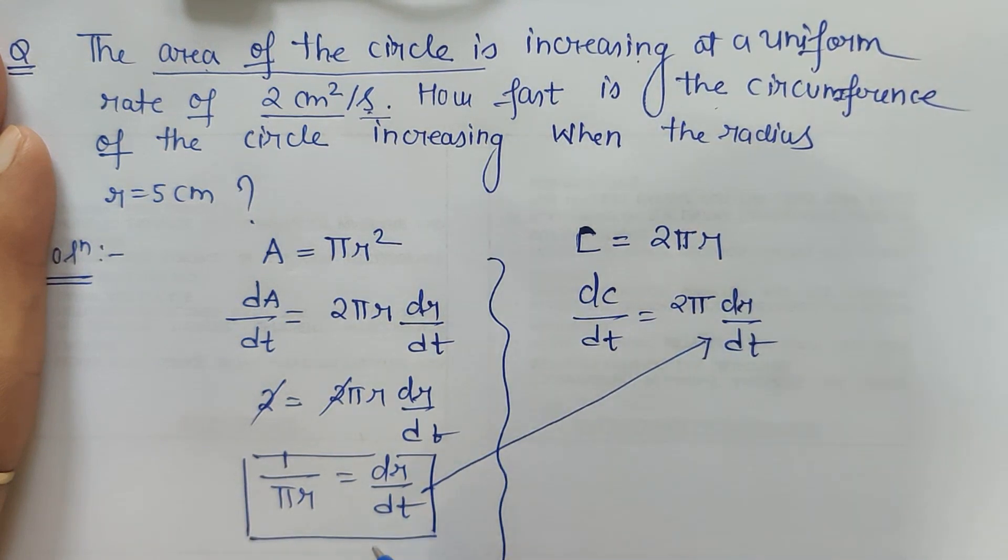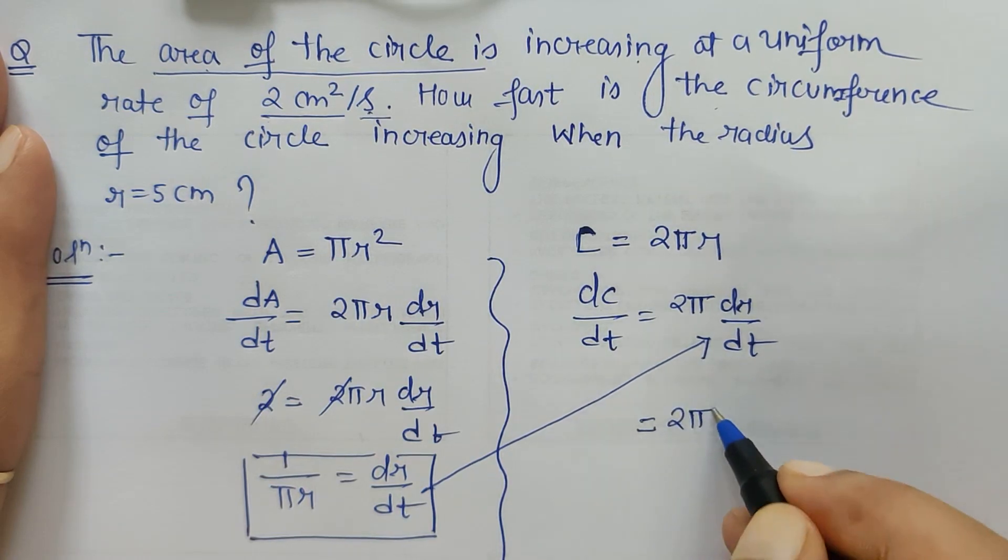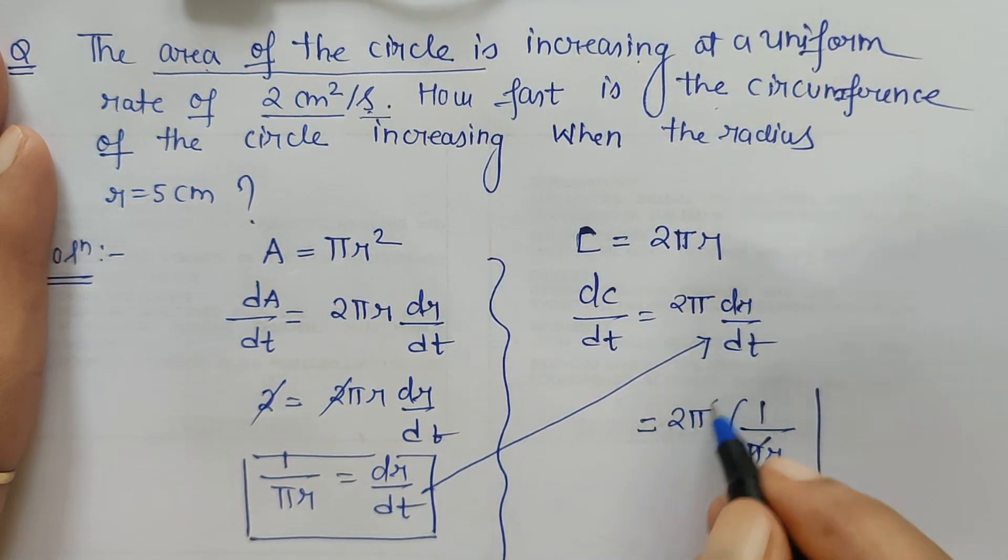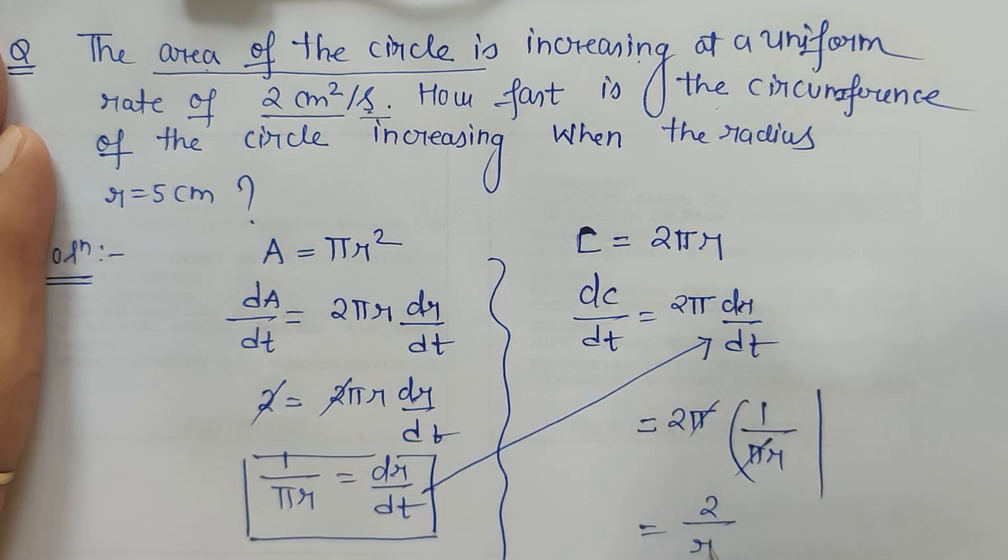dc/dt we are calculating, so 2π and dr/dt is 1 upon πr. This π and π gets cancelled, we get 2 upon r for dc/dt.